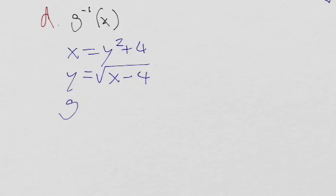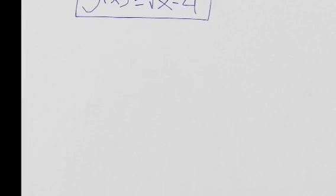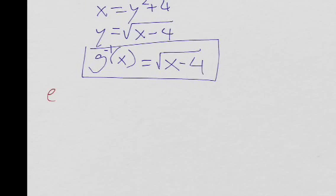That means the inverse function of g of x is equal to the square root of x minus 4. We can use this answer for part E, in which we are finding the inverse function of g evaluated at 20. We already found the inverse function, so all we have to do is plug 20 into it.